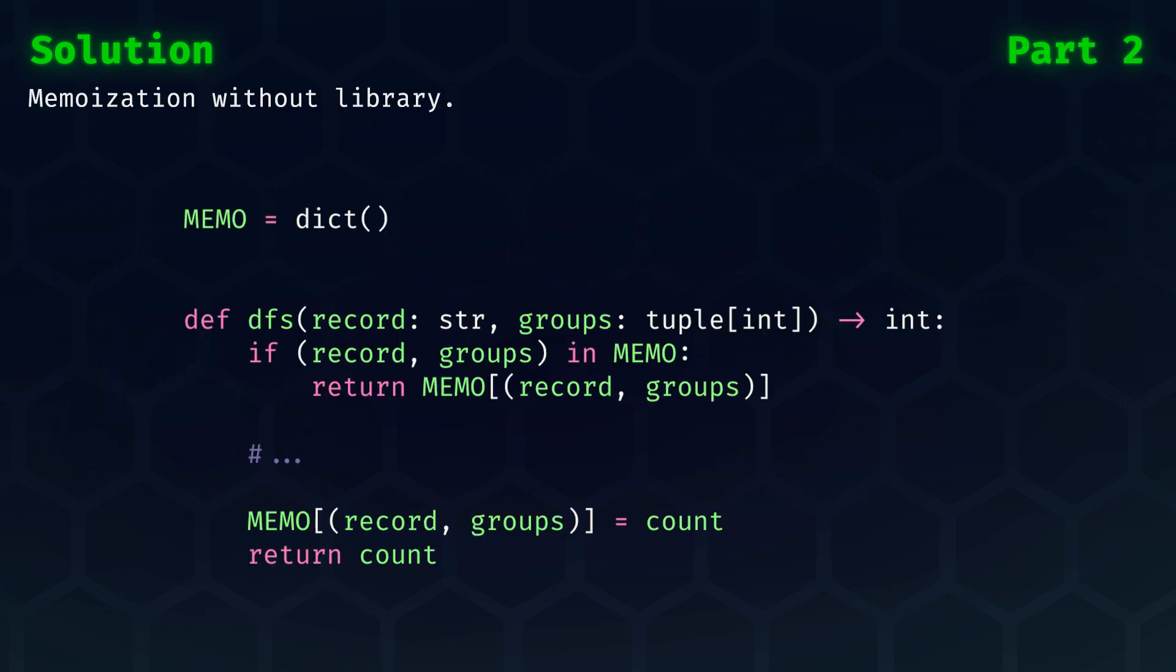For those of you who are not using Python, fret not. Here's how you can do it without relying on a library. You just need to make sure that your state can be used as a key in some dictionary or map, and then when you enter the recursive function, you check. Is this state already in the map? If so, then return the answer stored in the map. If not, continue with the function. Then at the end of the function, just before returning, make sure that you store the answer in the memo.